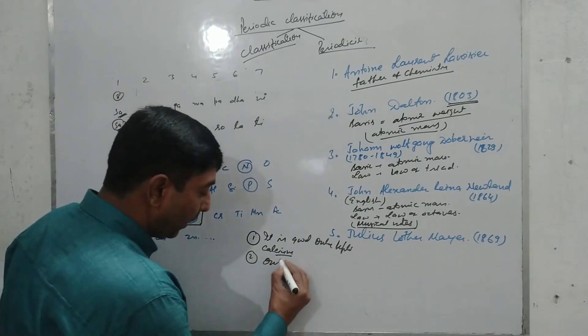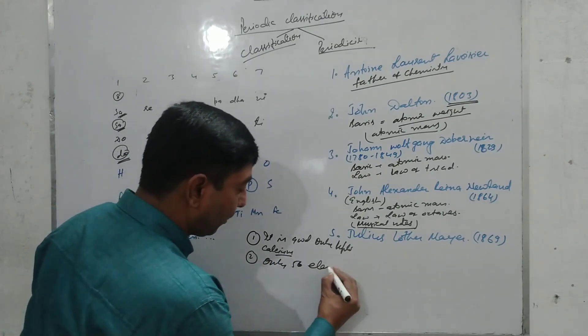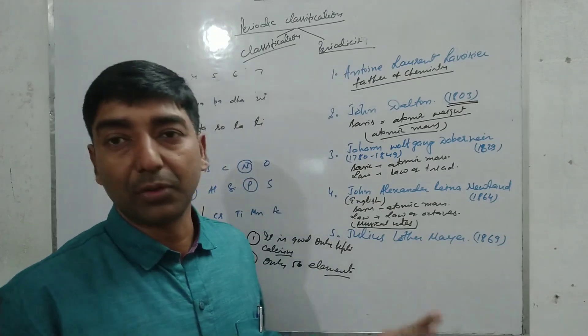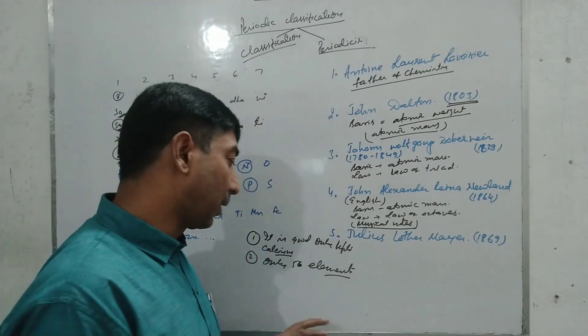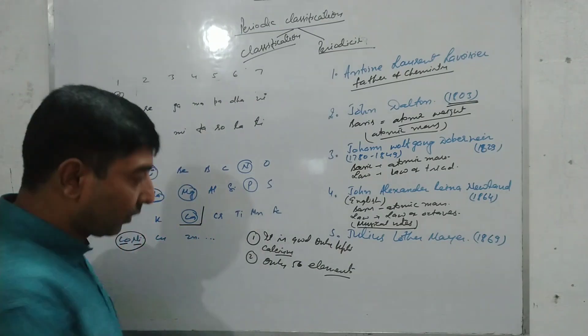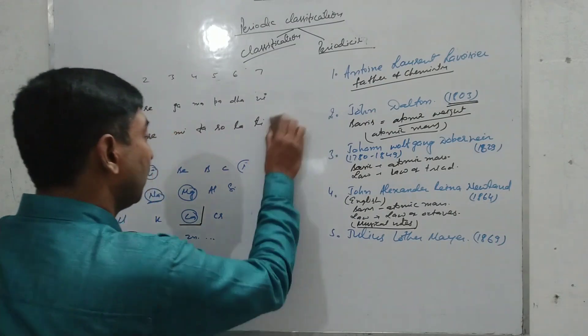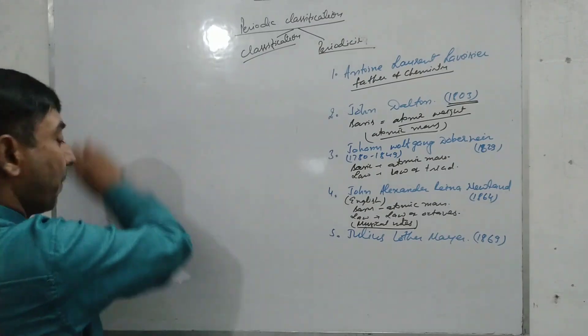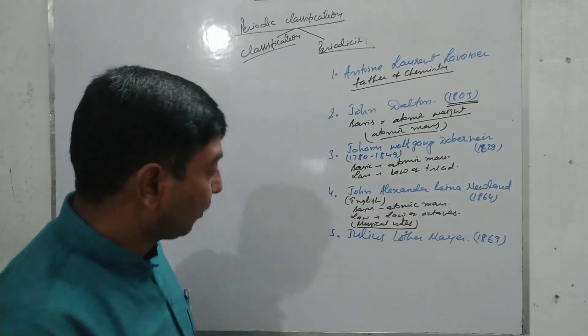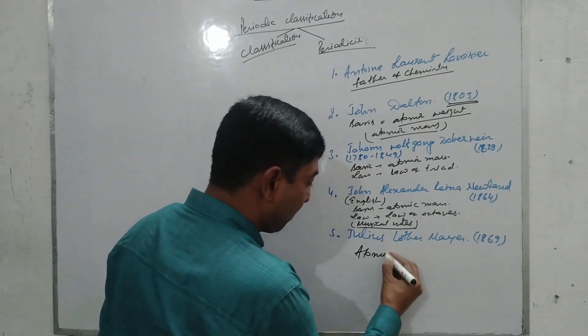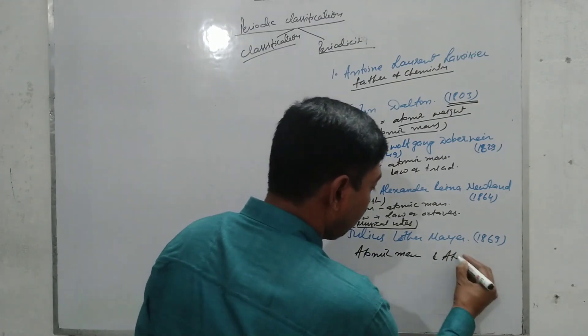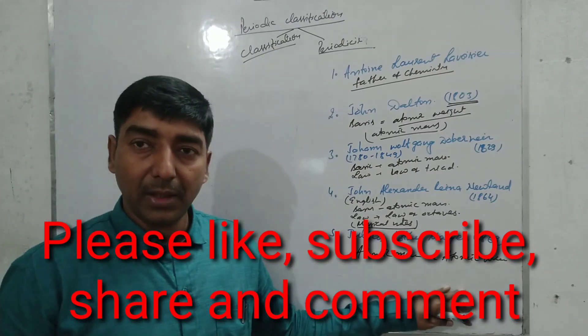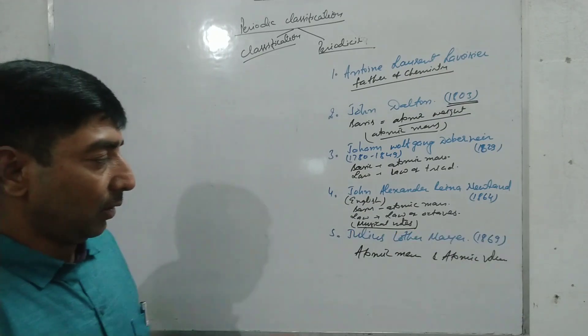He classified only 56 elements. There was no gap for the elements which were to be discovered in future. Now I'm coming to the next classification, that is Julius Lothar Meyer. His basis was also on the atomic mass and atomic volume. He plotted a graph between the atomic mass and atomic volume.